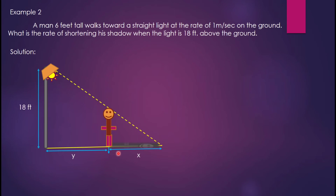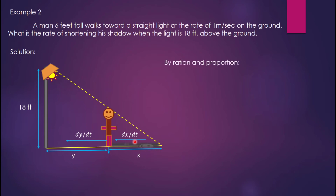We indicate x as the length of the shadow from the man to the tip of the shadow, and y as the distance of the man from the street light. The height of the light is 18 feet. The rate at which the man walks toward the light is dy over dt equals 1 meter per second. We want to find dx over dt, the rate of shortening of his shadow.